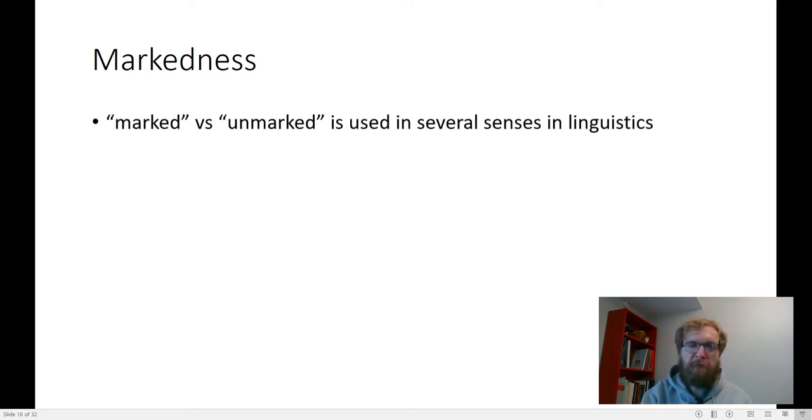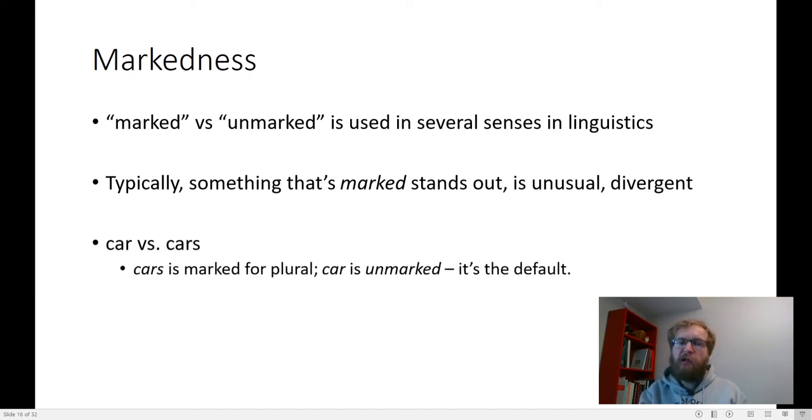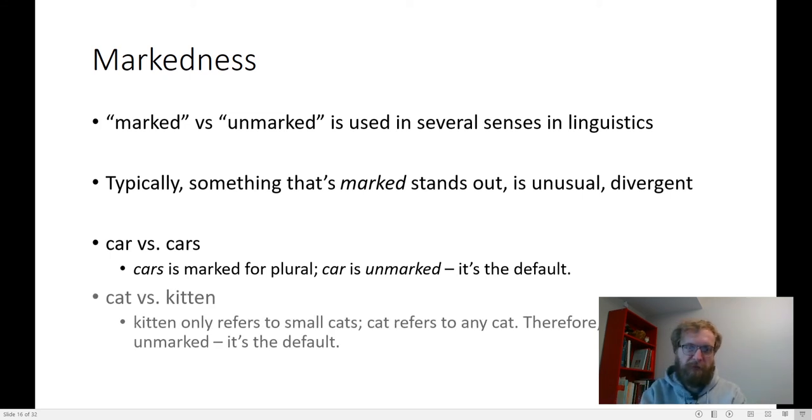We use this term marked in a couple of different ways in linguistics, typically to mean something that's unusual or divergent, but it can also mean marking like a plural marker. We talk about markedness in a lot of different ways in language. For instance, the difference between car and cars is a difference of marking the plural marker. Car is unmarked, it's the default, and cars has this extra thing attached to it. Another difference of markedness is cat versus kitten. Cat is the default type of feline. Kitten is a special kind. It's a small cat only, or a young cat. So kitten is marked with respect to cat, and that is not the default form.